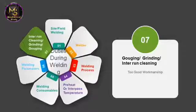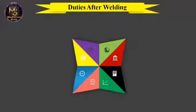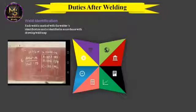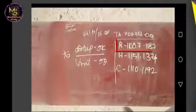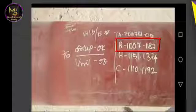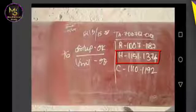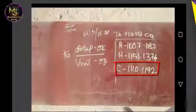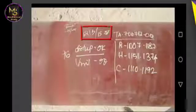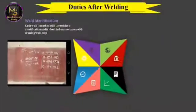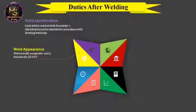Internal cleaning should be in accordance with an approved method to good workmanship standards. Welding should be balanced and under-welding avoided, as improper cleaning can lead to solid inclusion. After welding, weld identification is required — each weld should be marked with the welder ID. In this picture, every pass is marked: root pass by IDs 1007 and 1180, hot pass by 1151 and 1374, and capping by 1110 and 1192, along with weld completion date and welding inspector signature.